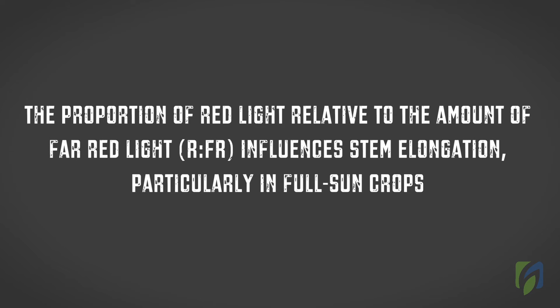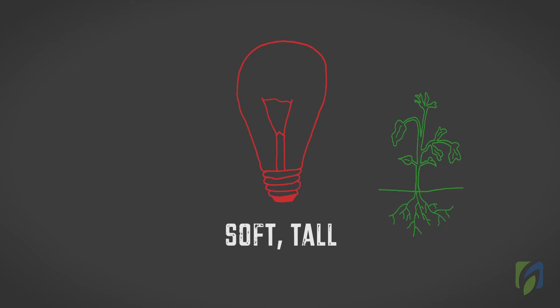The proportion of red light relative to the amount of far red light, which is referred to as the red to far red ratio, influences stem elongation, particularly in full sun crops. When plants are grown in red light, growth is soft and the internodes are long, resulting in tall plants.